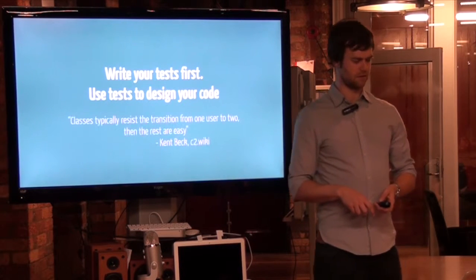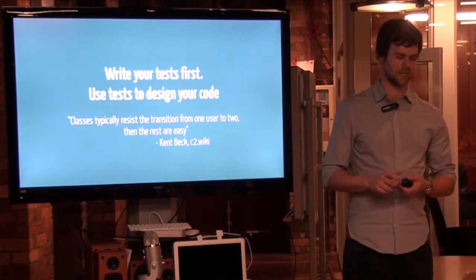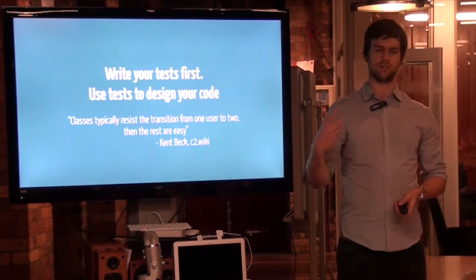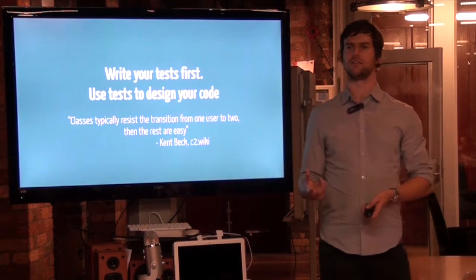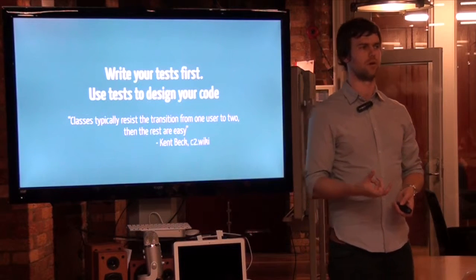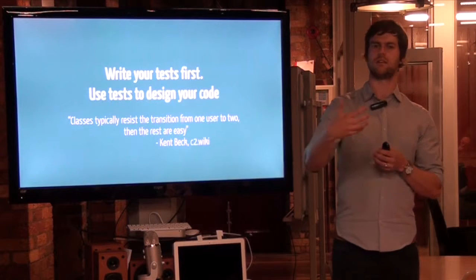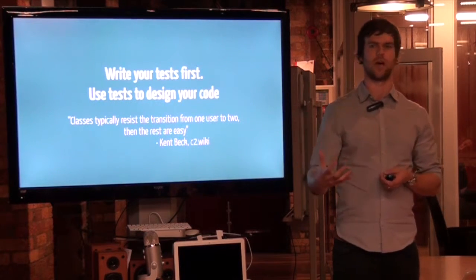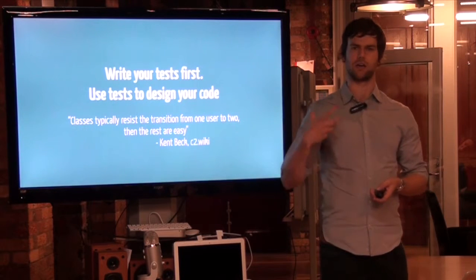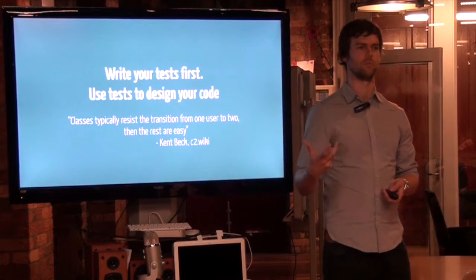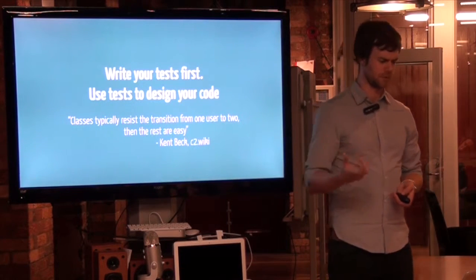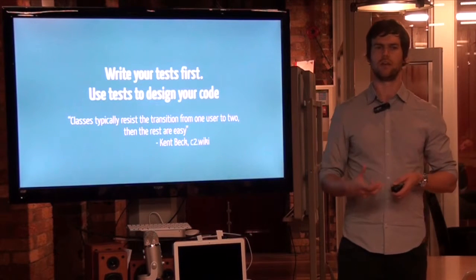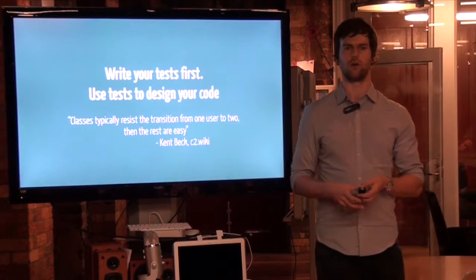There's a nice quote from Kent Beck on the C2 wiki: classes typically resist the transition from one user to two, then the rest are easy. If our goal is to write reusable code, when we write our tests we automatically have two users of our code — the tests and the actual app. Kent Beck drove a lot of that test-driven development movement about 10 years ago, and his statement was that this forces you to write reusable code from the start.